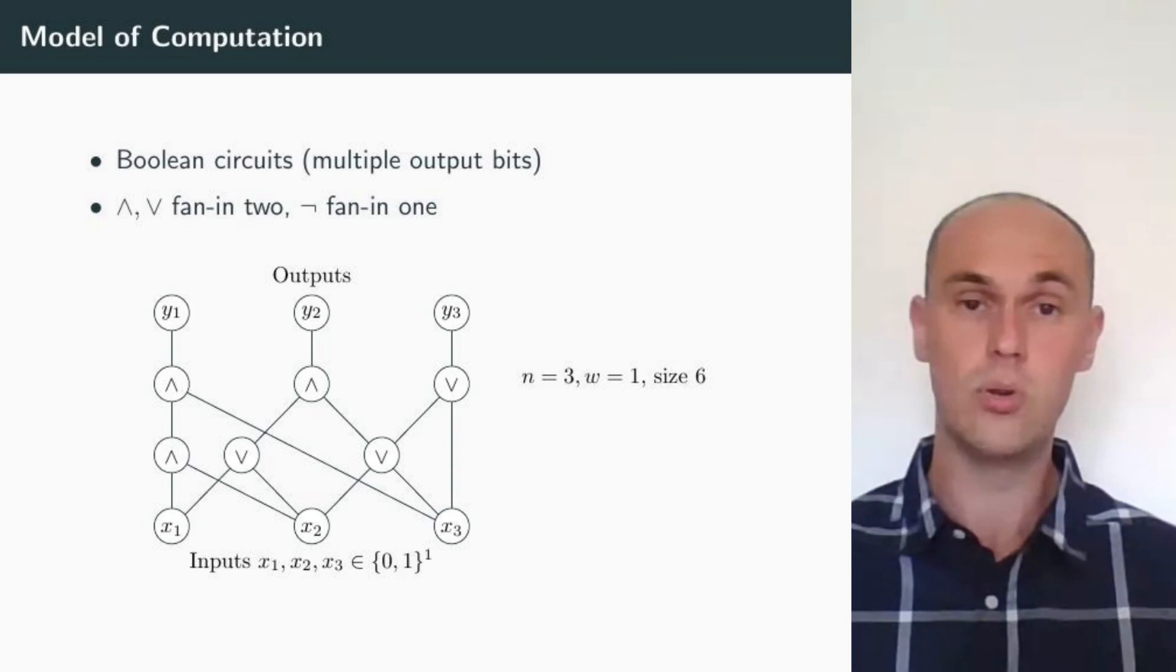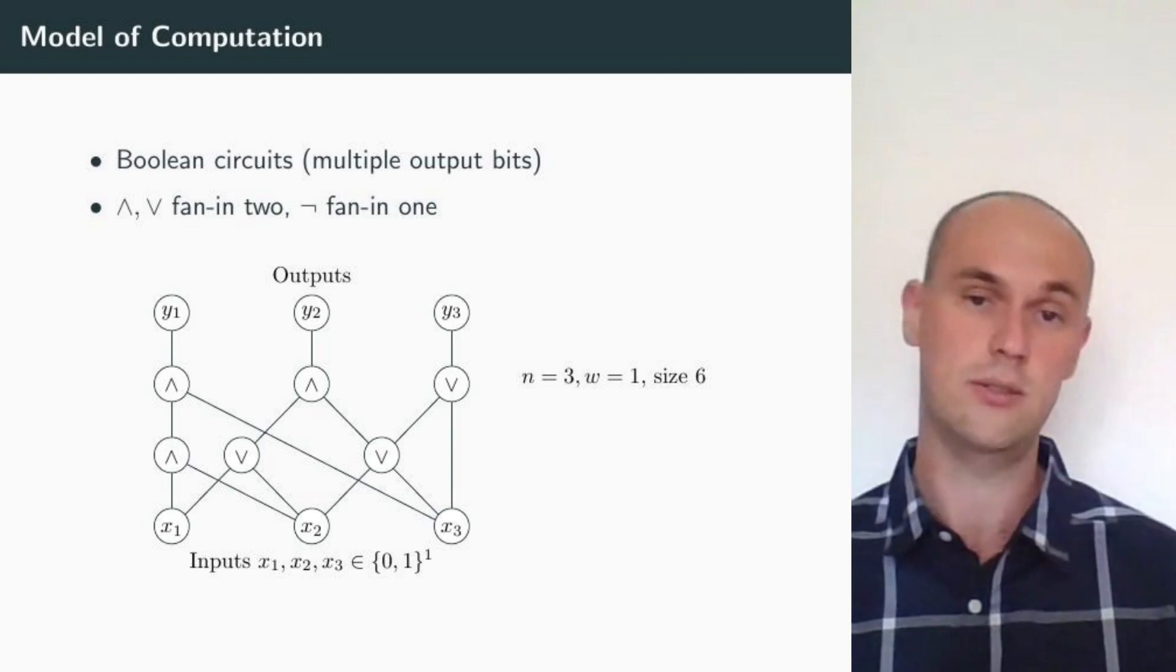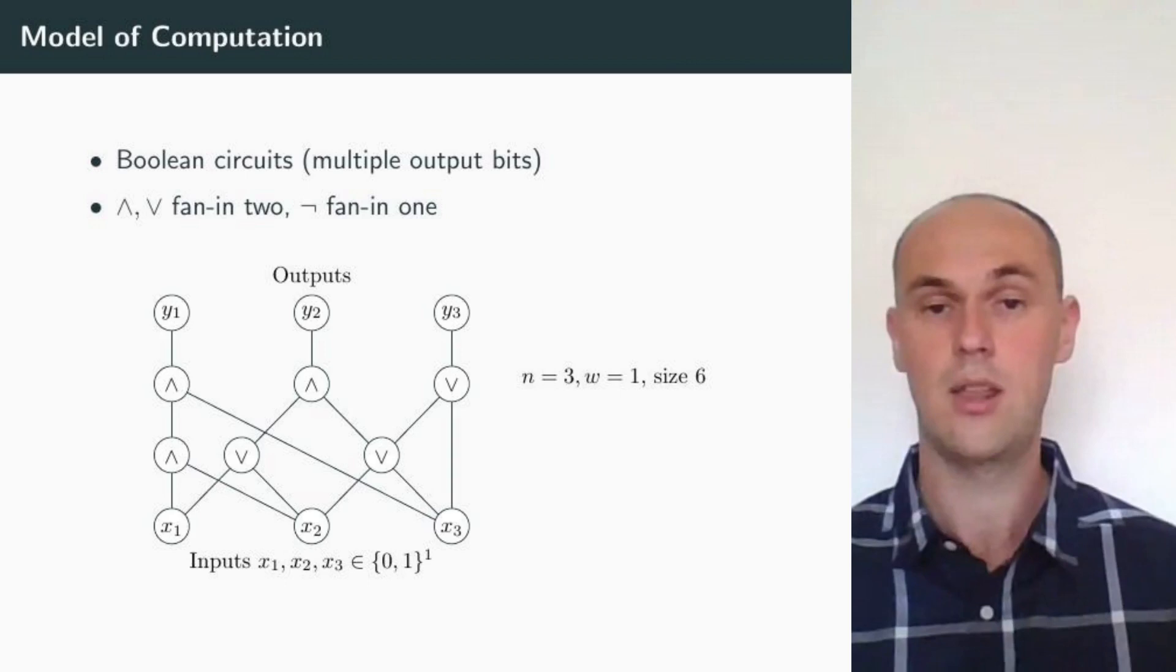Our model of computation are Boolean circuits. And when I say Boolean circuits, what I really mean are families of Boolean circuits, consisting of AND and OR gates of Fanin 2 and negations of Fanin 1.